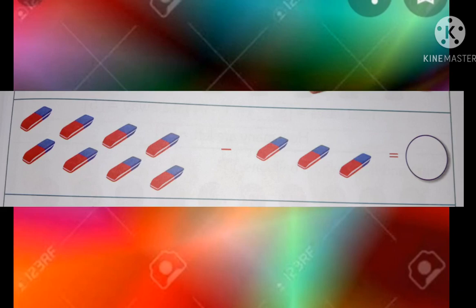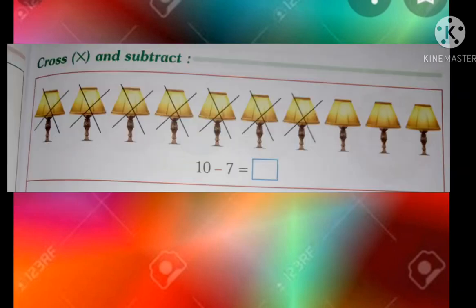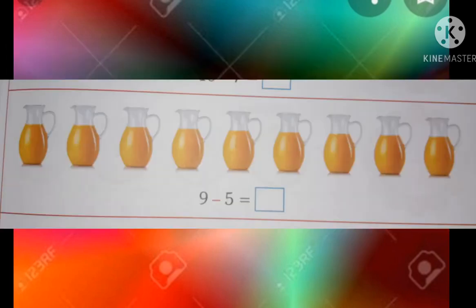Count: 1, 2, 3, 4, 5. The answer is 5. Cross and subtract — cross and subtract, then count: 1, 2, 3, 4, 5, 6, 7, 8, 9. That gives 9 — a star shape.